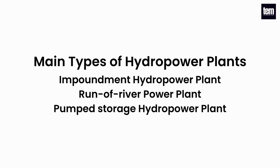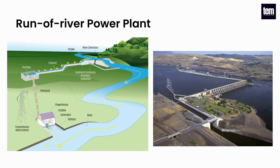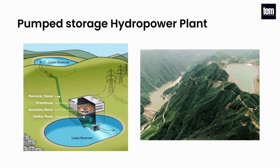Main types of hydroelectricity production power plants are impoundment, run-of-river, and pumped storage hydropower plants. In an impoundment hydropower plant, water is collected across the river by construction of a dam. When water is released through the dam, the gravitational potential of the elevated water spins a turbine connected to a generator that produces electricity. Run-of-river power plants use the kinetic energy of naturally flowing river water to generate electricity. Pumped hydropower storage uses the force of gravity to generate electricity using water that has been previously pumped from a lower source to an upper reservoir.